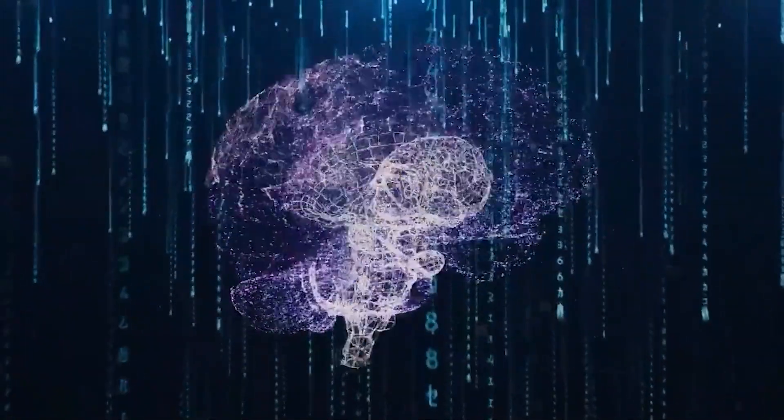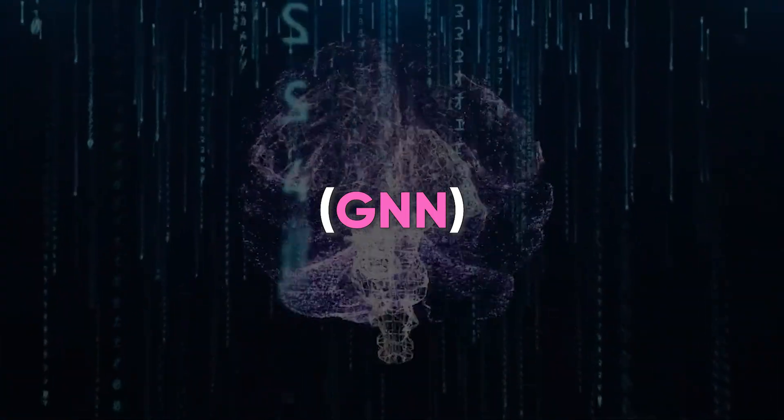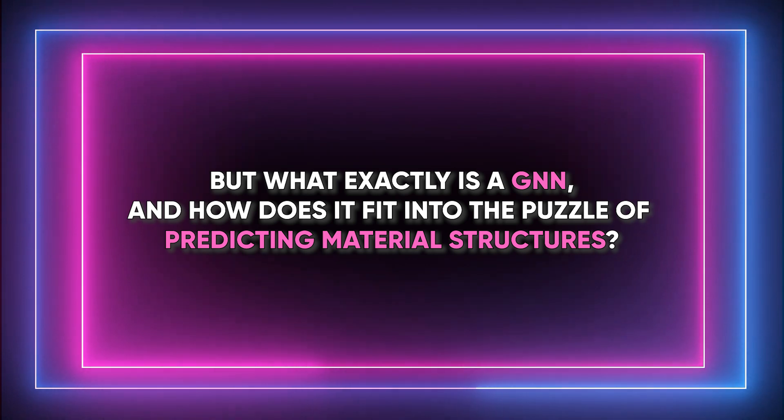In terms of functionality, the core of GNOME's intelligence lies in its use as a graph neural network, GNN. But what exactly is a GNN? And how does it fit into the puzzle of predicting material structures?